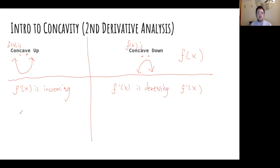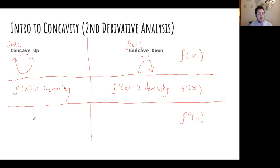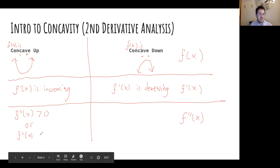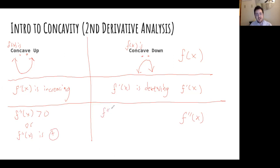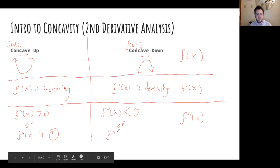Now where we really get into second derivative analysis is thinking about f''(x). If we have a concave up situation, this means that f''(x) is greater than zero — in other words, f'(x) is positive. And likewise, in concave down — think down, think less than — f''(x) would be below zero, meaning f''(x) is negative.